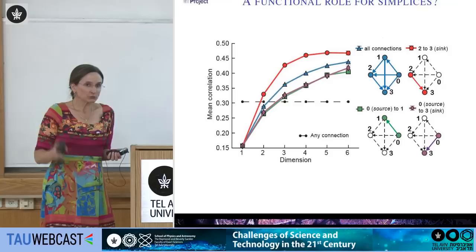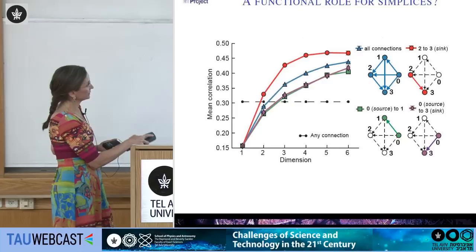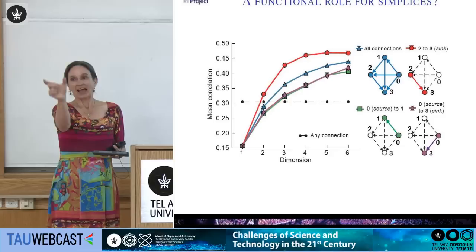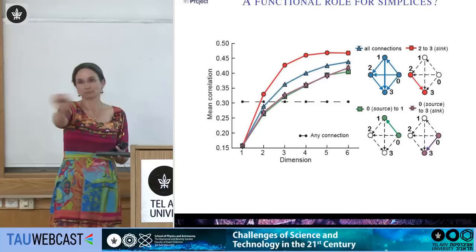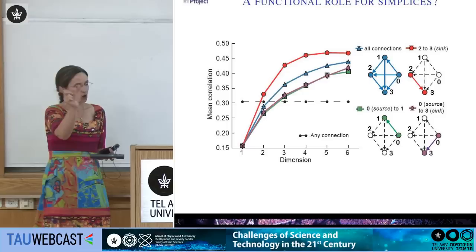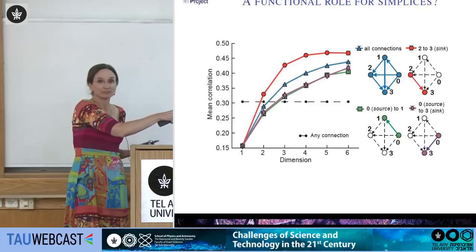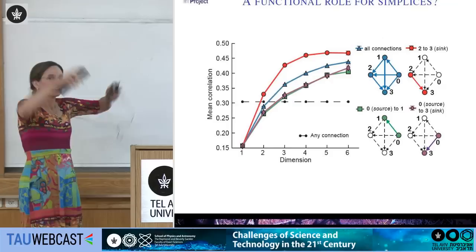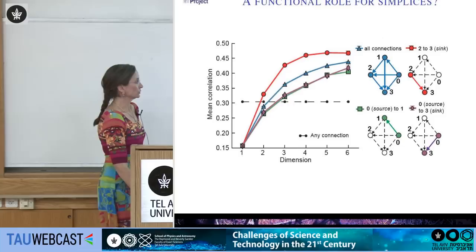Conversely, if you're a connection at dimension one — just two neurons connected with this edge not belonging to any larger simplex — your correlation is actually much lower than the average. If you're not part of something bigger, your chances of being correlated are not that high. You really have to be part of something bigger. This indicates that these simplices actually have something important to say about functional relationships in the circuit.